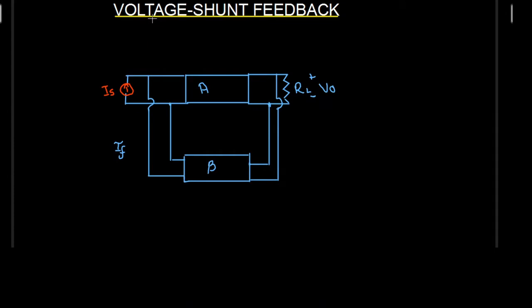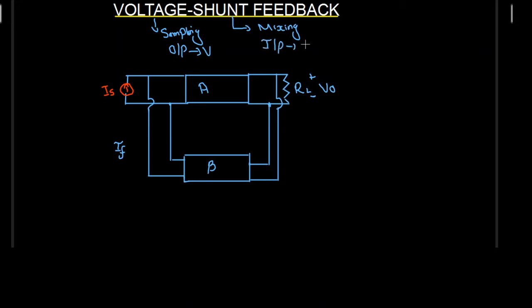We learned in previous lectures that the first term indicates the sampling, and sampling always takes place at the output side. So in this case we have voltage sampling, which means that the output signal is going to be voltage. We also learned that the second term indicates the mixing, and mixing always takes place at the input side. So we have shunt mixing, and currents are added or subtracted in parallel in shunt. That is why when we have a shunt, the input side is going to be current.